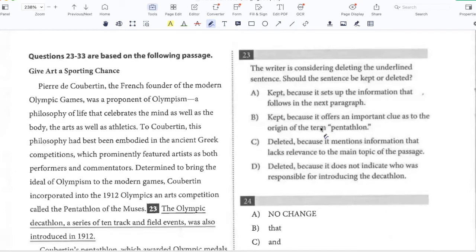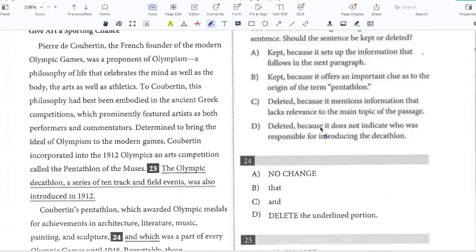The writer is considering deleting the underlined sentence. Should the sentence be kept or deleted? Here in the first paragraph, I'm saying that Coubertin was interested in both athletics and the development of the mind. In the 1912 Olympics, he introduced something inspired by the original Greek competitions, the Pentathlon of the Muses, which was basically related to arts. The Decathlon, which is a track and field event, was also introduced in 1912. That's not relevant at this stage, because the focus here is arts, the development of the arts. So I should delete the sentence because it mentions information that lacks relevance to the main topic of the passage. So that's a good point because it's not relevant.